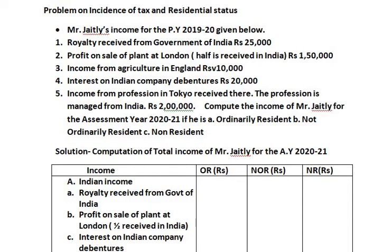When we are solving a problem on residential status, there are four kinds of income that can be given in the sum. Those four kinds are: Number 1 - Indian income, Number 2 - Foreign income, Number 3 - Exempted income, and Number 4 - Past untaxed foreign income. Indian income is the income which is earned in India, deemed to be earned in India, received in India, or deemed to be received in India.